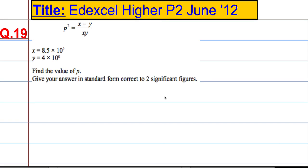Question 19. p squared equals x minus y all divided by xy, where x is 8.5 by 10 to the power 9, and y is 4 by 10 to the power 8. Find the value of p, give your answer in standard form, correct to two significant figures.